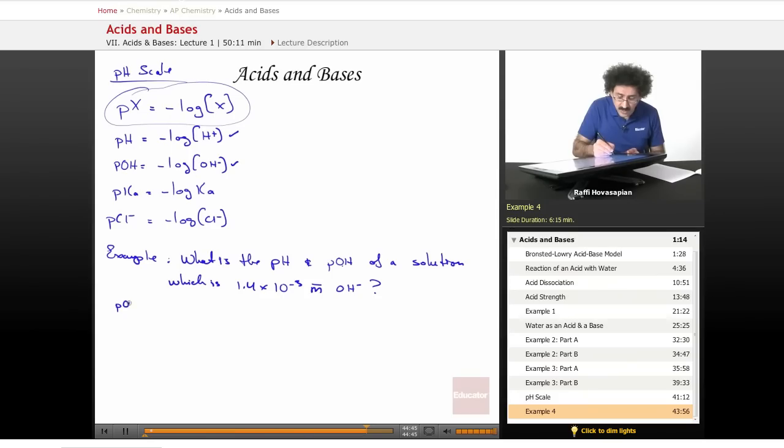So pOH is equal to negative log of the OH minus concentration, which is negative log of 1.4 times 10 to the negative 3. So I just stick in, this is the calculator, I take the logarithm of it, I change the sign, and I end up with 2.85.